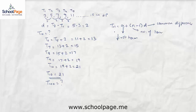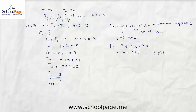Let us use the formula to find the 10th term. t10 equals a plus (n minus 1) times d. Here a equals 3, n equals 10, and d equals 2. So we get 3 plus 9 into 2, which is 3 plus 18, equal to 21.